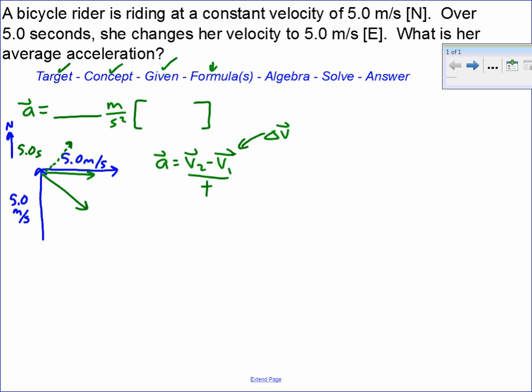That works fine in one dimension with positive and negative values, but in two dimensions this doesn't quite work because the final velocity is east and the initial velocity is north. What we have to do is figure out how to do this with vectors. We've learned how to add vectors by placing them head to tail, but when we're working in corners, we can still do head to tail, but this is adding. I never told you how to subtract vectors.